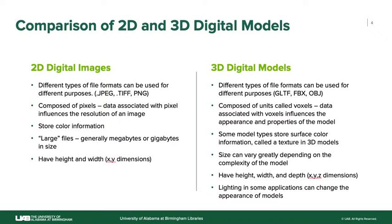Two-dimensional digital images are composed of a piece of information called a pixel, and the data associated with the pixel influences things like the resolution of the image. If you've ever tried to make an image bigger by clicking and dragging and the picture got blurry, that's a characteristic influenced by the resolution. 3D digital models are composed of units called voxels, and that influences the appearance and properties of the model — particularly the size and complexity. The more complex a model, the more information it contains, which makes it take more computing power to manipulate.